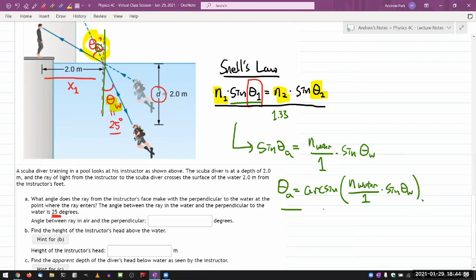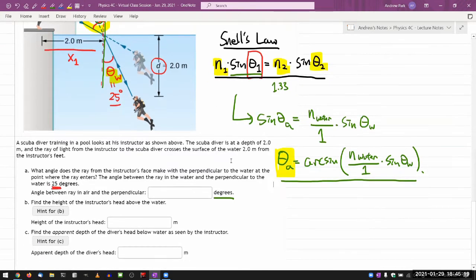And so the angle in air is arc sine of this whole thing, N water divided by one times the sine of theta w. Now, be careful that you're plugging in the numbers, and when you do arc sine, depending on your calculator setting, you might get radians or degrees. The question is looking for a degree answer. So that's it. For the rest of this question, I'm going to treat this theta a as a known quantity, because we solve for it here. So it's a numerical value that you would know as you're doing b and c.